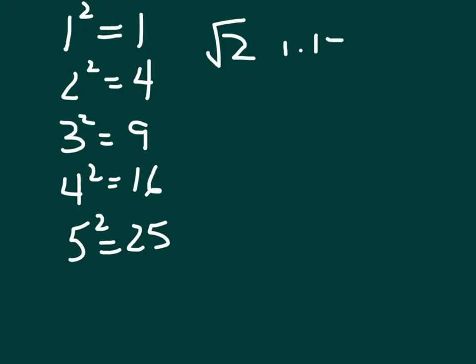So the square root of 2 is a number that goes on forever — it's 1.41 and yet it keeps on going. The square root of 3: there is no number that you can multiply by itself and get a 3 on the end, so it's 1.7 and it goes on forever.